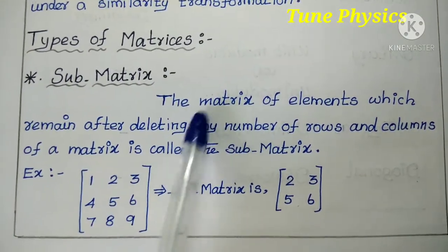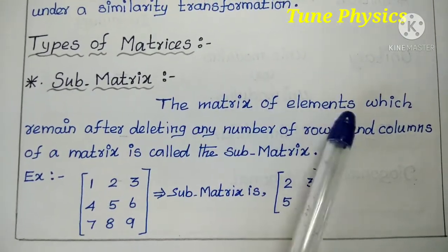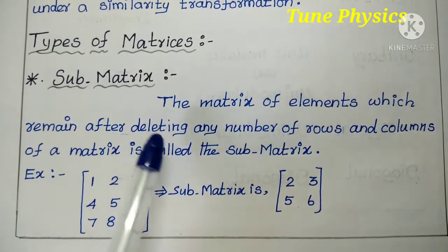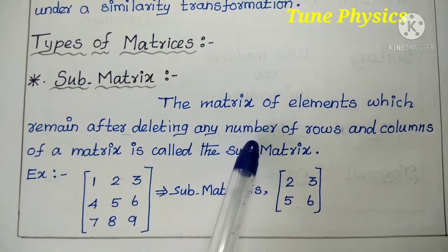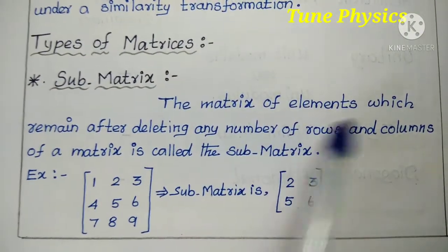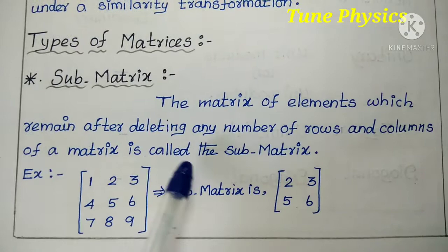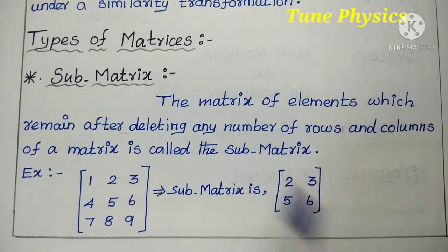The matrix of elements which remains after deleting any number of rows and columns of a matrix is called a sub-matrix.